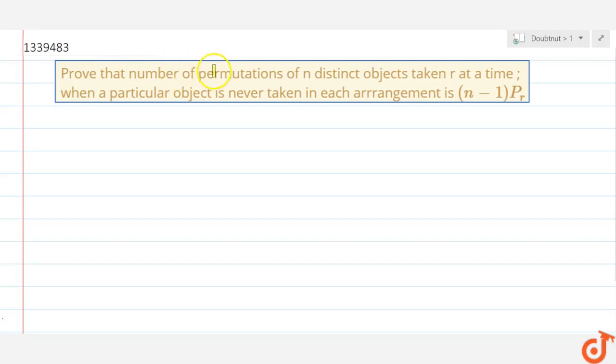Hi guys, this question I have to prove: what are the total number of permutations of n distinct objects taken r at a time such that one particular object is never taken in the arrangement?